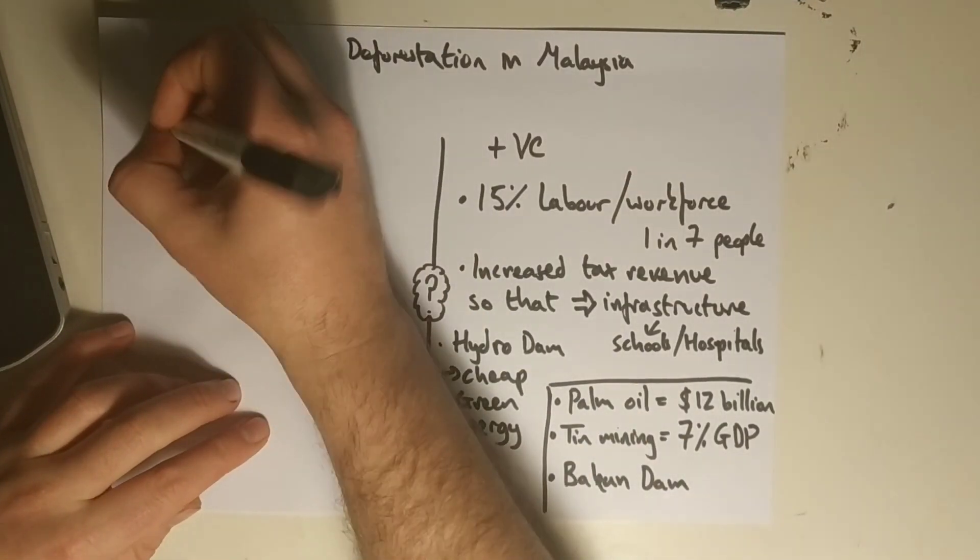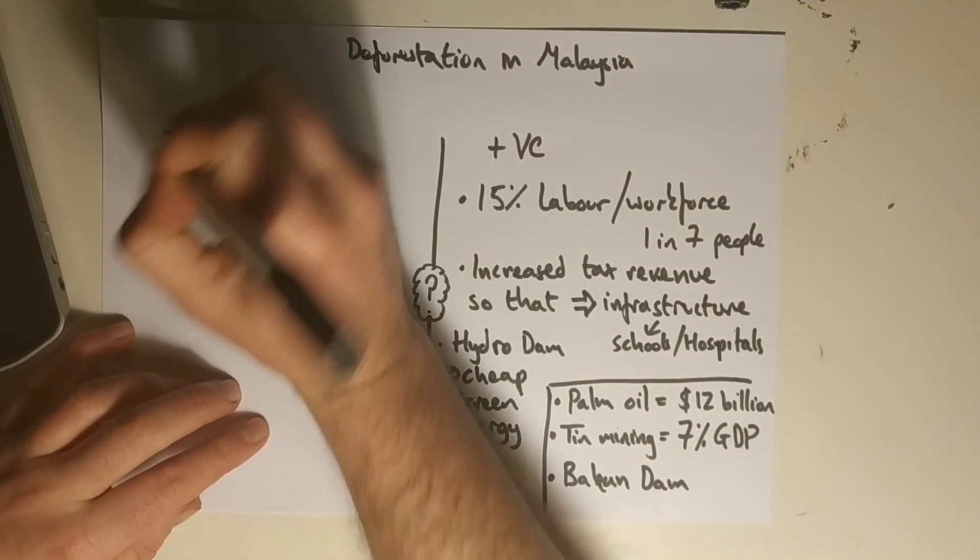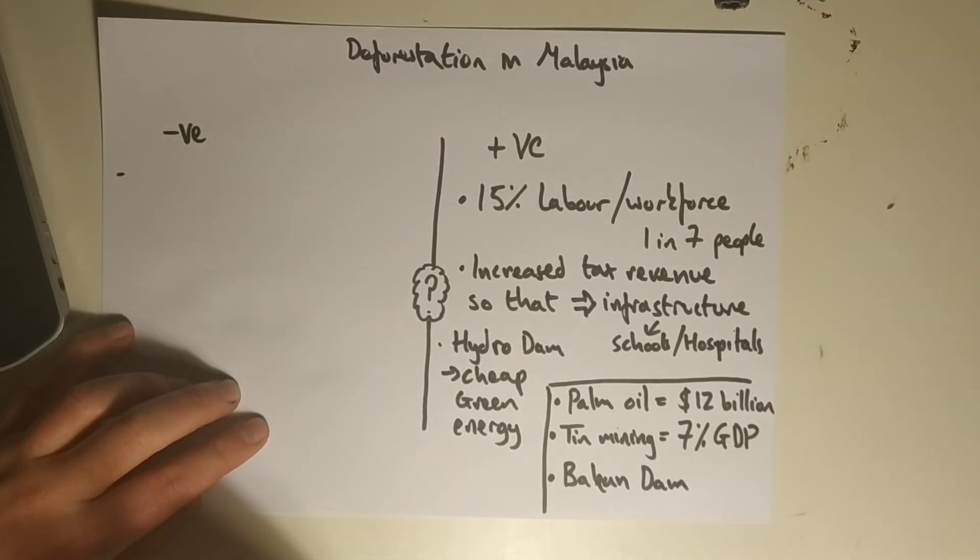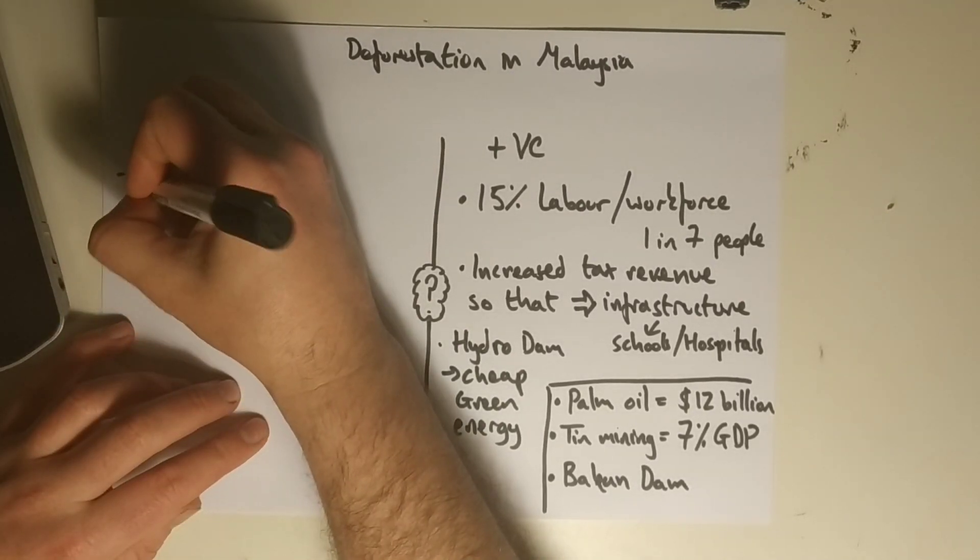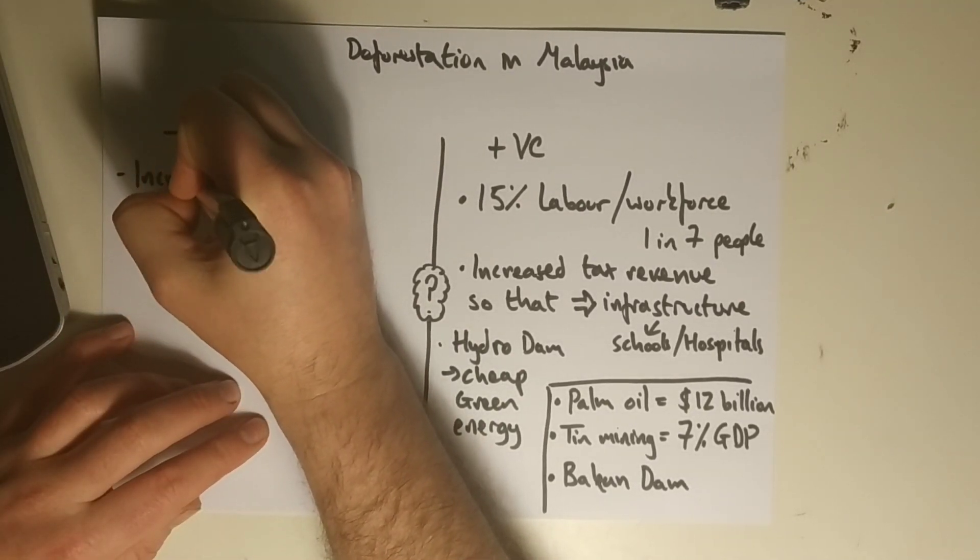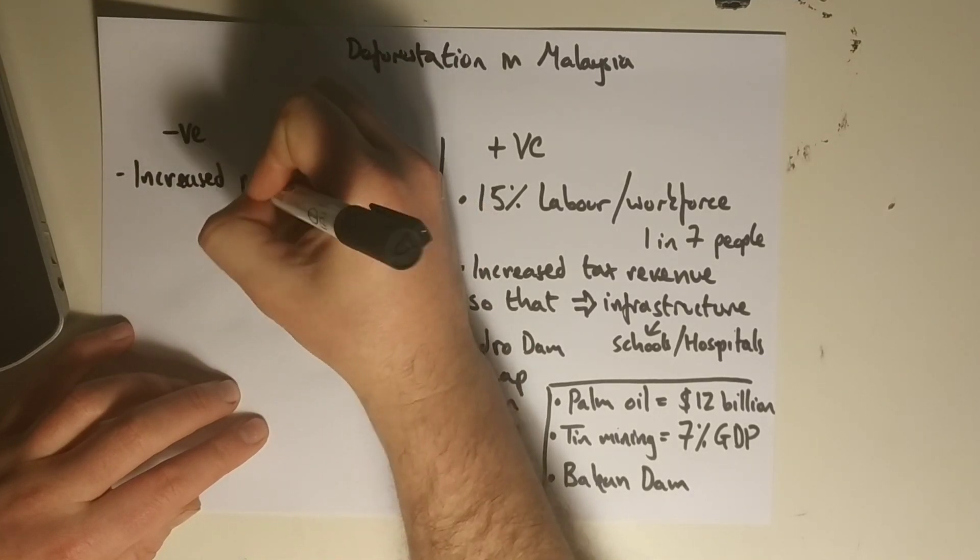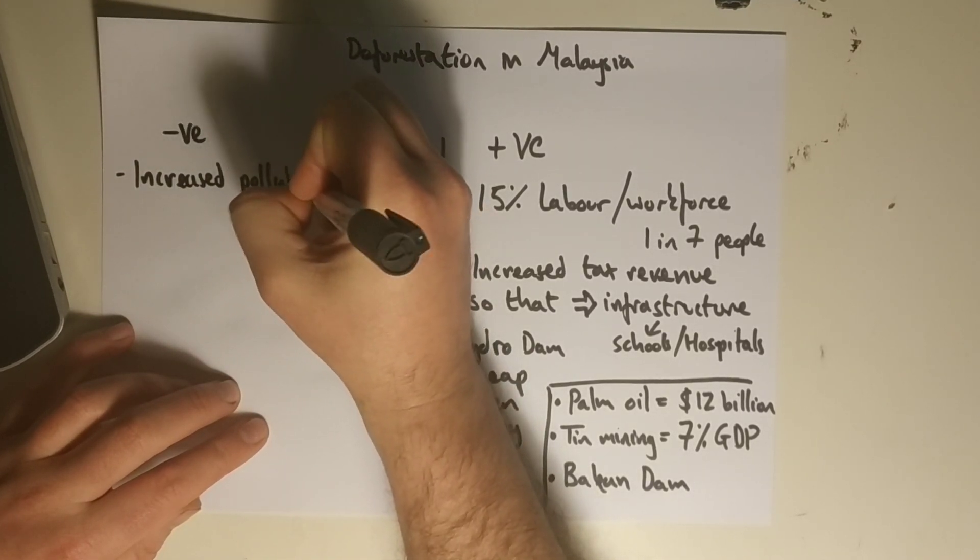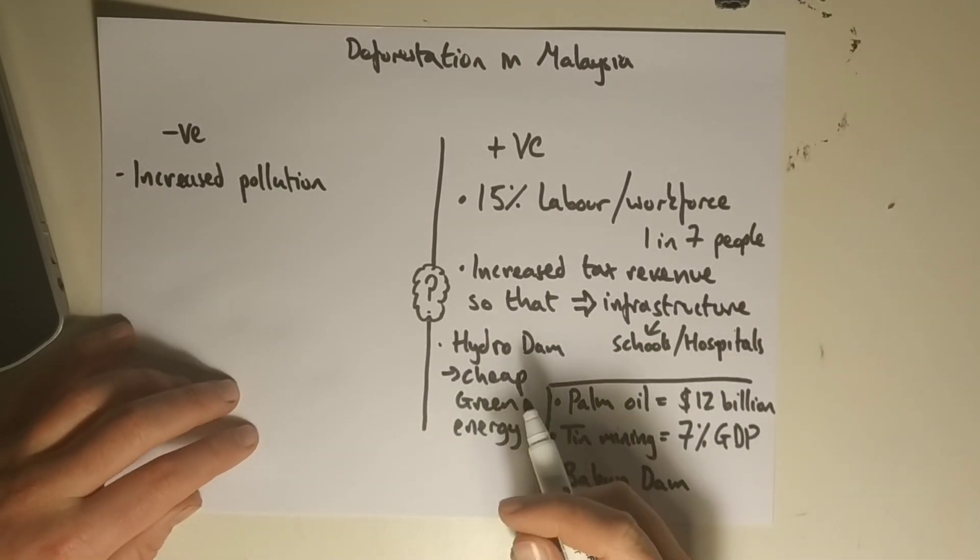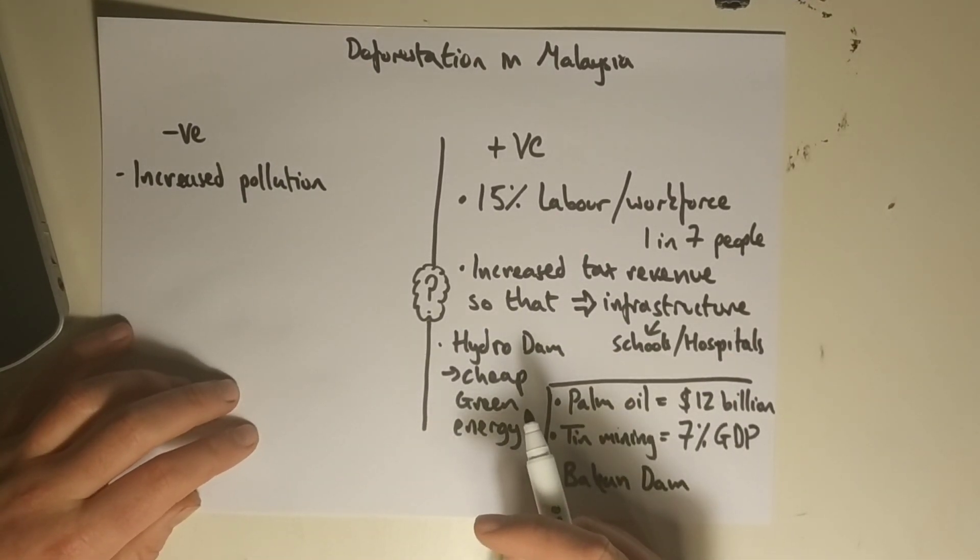However, let's have a look at some of the negatives very quickly. So a classic negative that's caused by deforestation is increased water pollution, and that's certainly occurred in Malaysia. As the trees are cut down, we have huge amounts of runoff occurring.